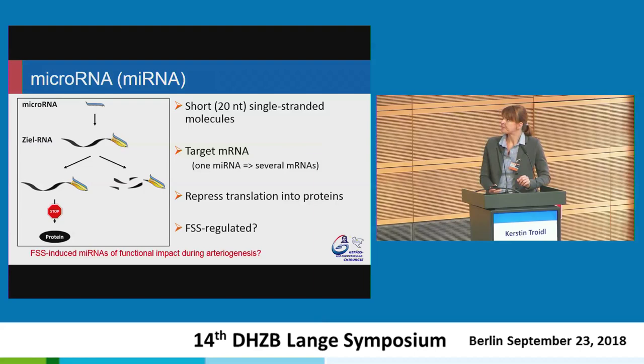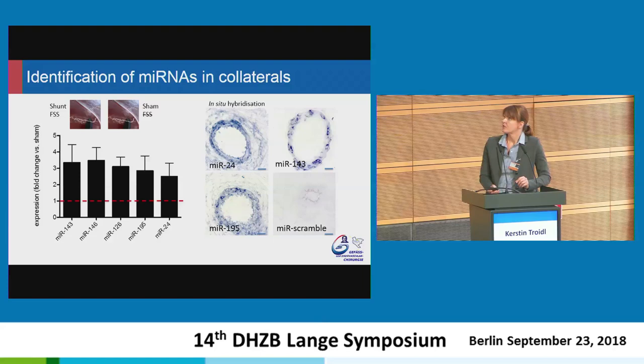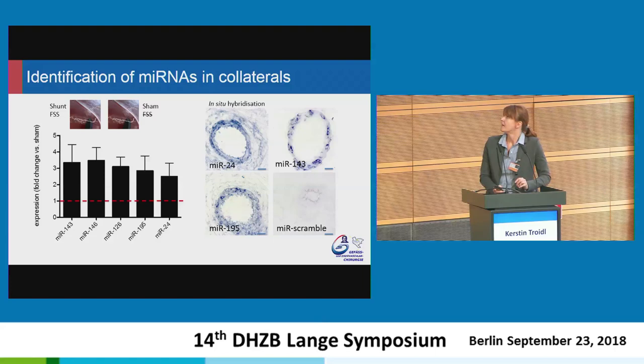We used rats, treated them with AV shunt, and collected the collateral tissue from both shunt-treated and sham-treated animals — without increased shear stress — and found several differentially expressed microRNAs. We then localized these microRNAs in the vessel wall, as shown in collateral cross-sections where they are stained in blue, and we can see that they are specifically expressed in the collaterals.